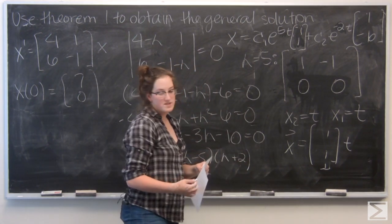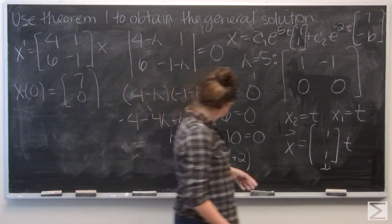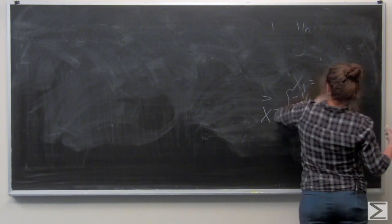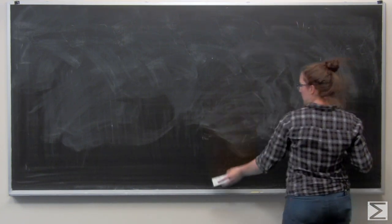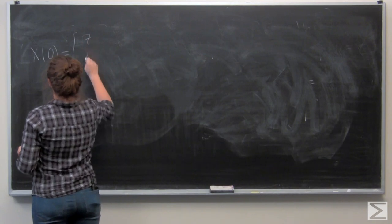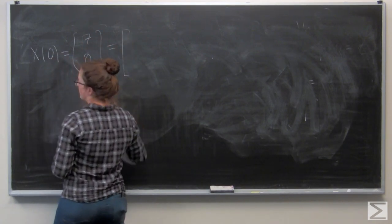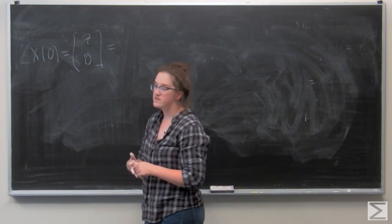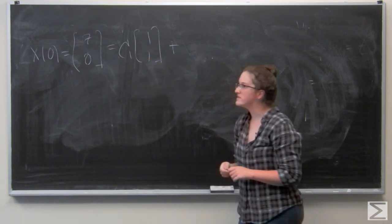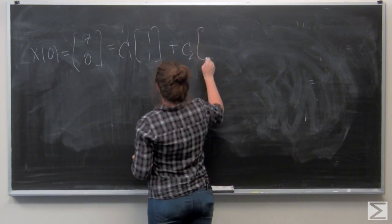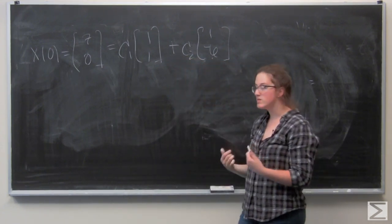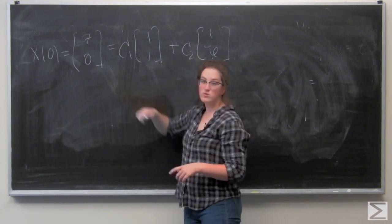And I know that x of 0 is 7, 0. So let's move again over here and plug in 0 for t. So I have c1 e to the 0, which is just 1. So c1 times the vector 1, 1 plus c2 times the vector 1, negative 6. And I'm just going to solve for c1 and c2. And I can use an augmented coefficient matrix. So I'm going to go ahead and set that up. This is going to be these vectors as columns set equal to the vector 7, 0.